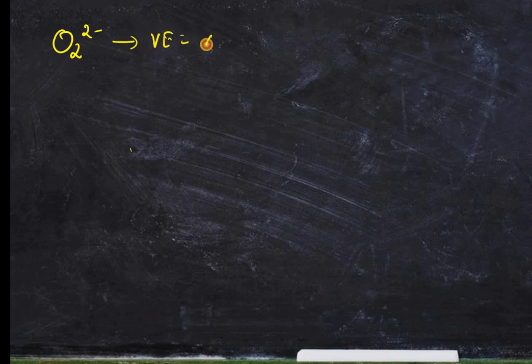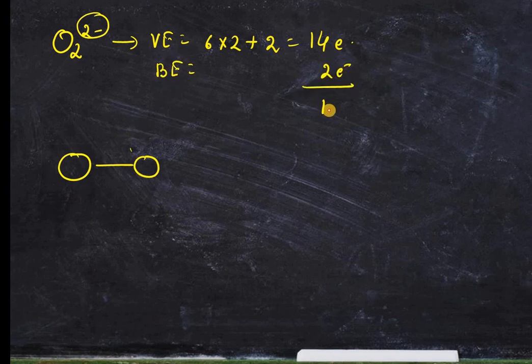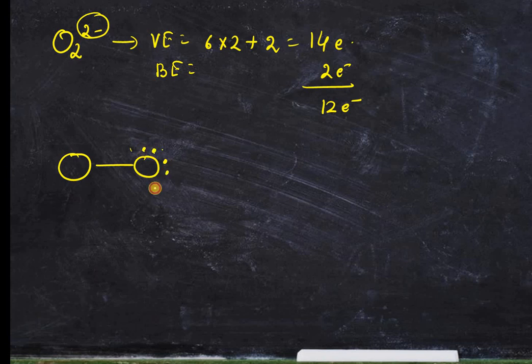Now how to draw the Lewis structure for peroxide. The formula for peroxide is O₂²⁻. Total valence electrons: 6 times 2 = 12, plus 2 for the minus charge, so total we have 14 electrons. Forming one single bond uses 2 electrons, leaving 12 electrons as lone pairs. Let's arrange them: 1, 2, 3, 4, 5, 6 on one oxygen — done. Then 1, 2, 3, 4, 5, 6 on the other — everyone has 6 electrons.